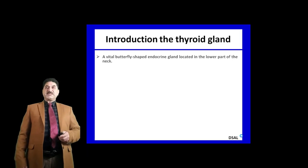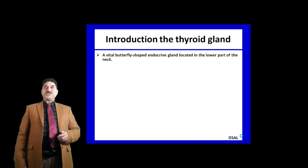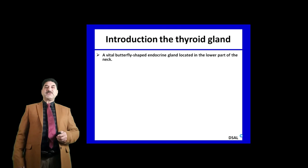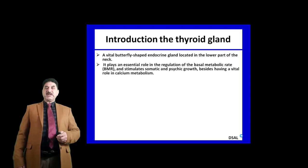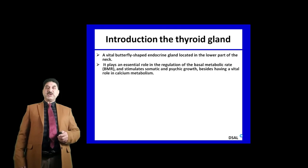Thyroid gland is a butterfly-shaped endocrine gland located in the lower part of the neck. It plays an essential role in regulation of basal metabolic rate and stimulates somatic and psychic growth, besides having a vital role in calcium metabolism.